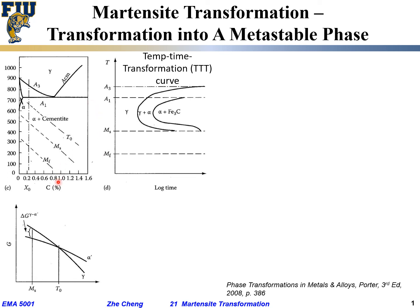The transformation going from gamma to the alpha prime phase has an equilibrium temperature at T0, which is illustrated between the gamma line and the alpha prime line. If we are a little bit below T0 at Ms, we have a so-called driving force for the phase to go from gamma into alpha prime.